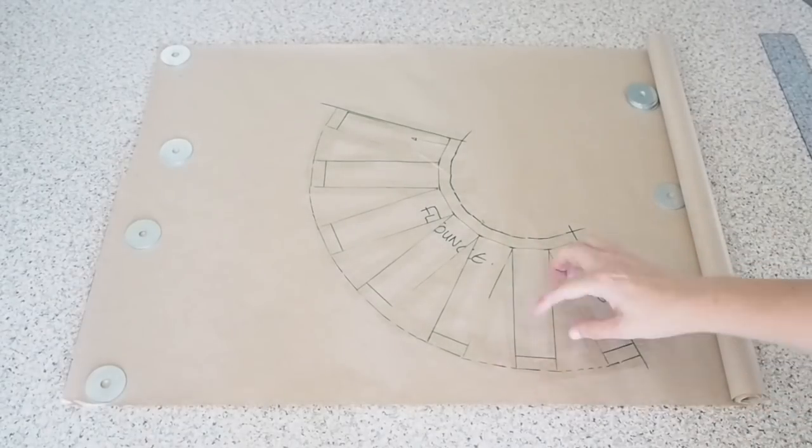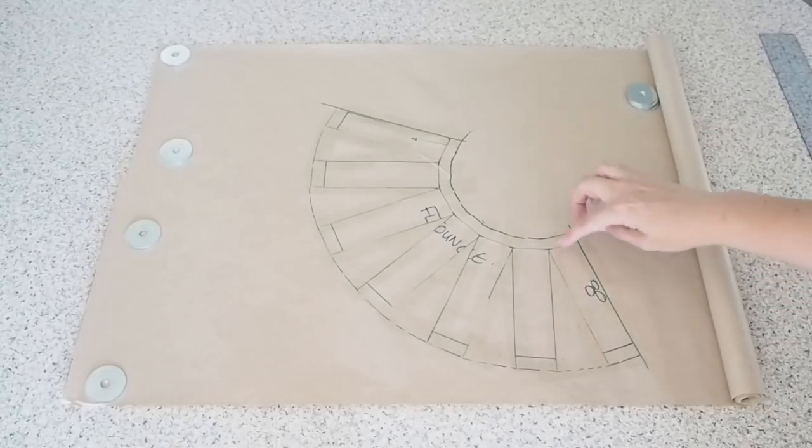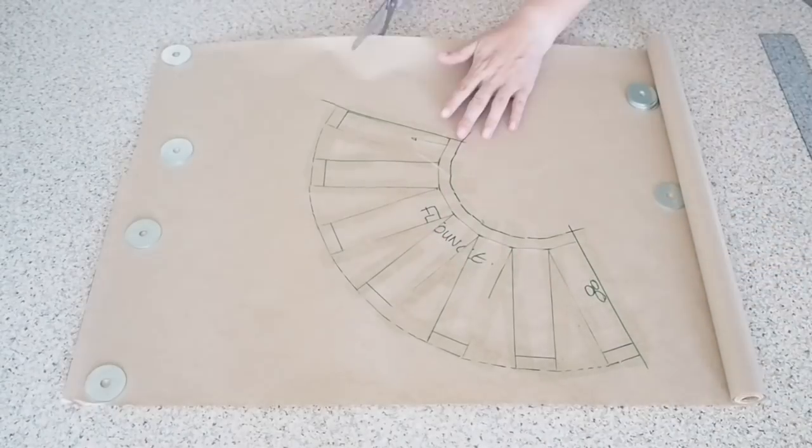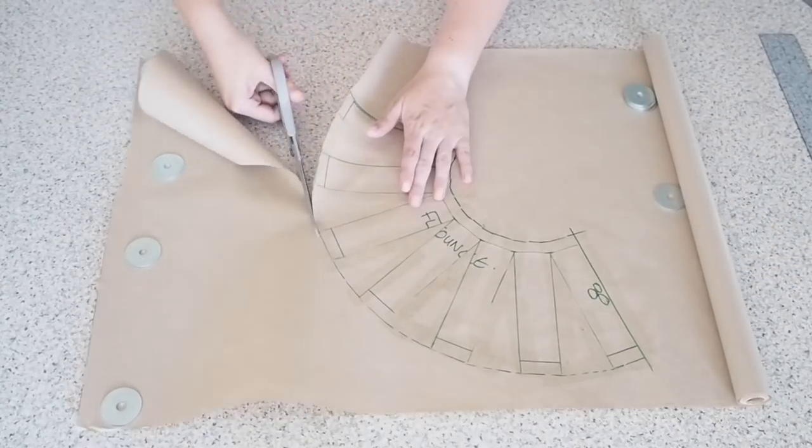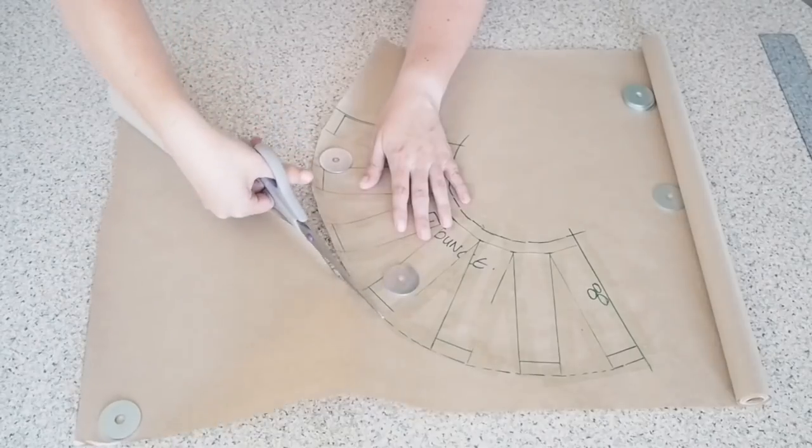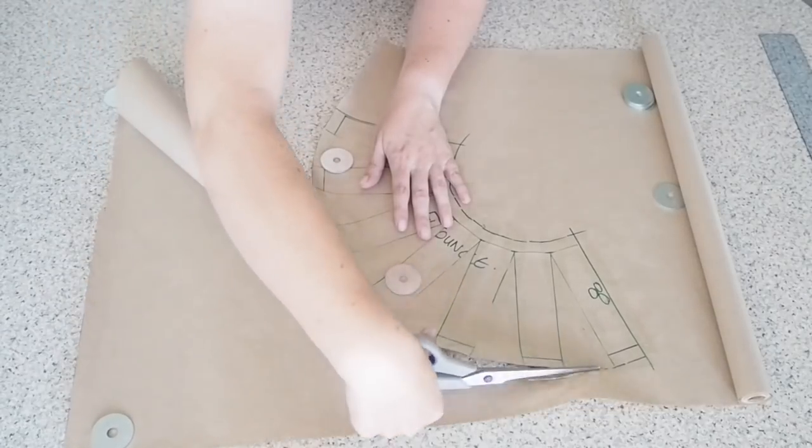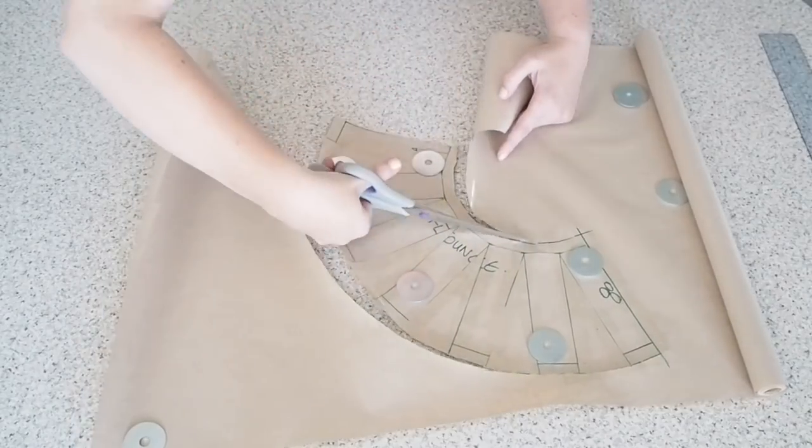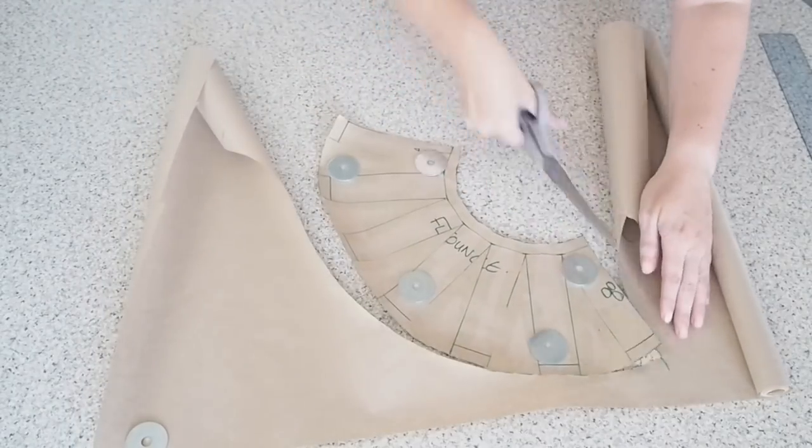You could do this freehand if you wanted. The main thing to remember is just to make sure that the bottom line is nicely curved and it joins up each of the slash lines. So really that's all there is to it. So I'm just cutting out my final pattern piece. I'm going to label it and that's really it done.